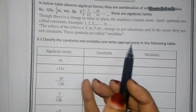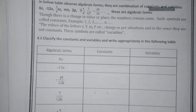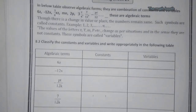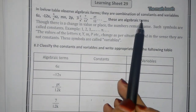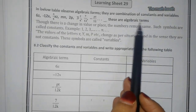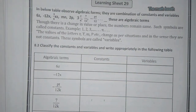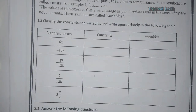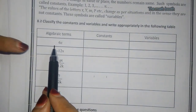A table has been given to fill in. One more thing — the combination of a constant and a variable together is called an algebraic term. Now we have to separate the constants and variables from these algebraic terms.